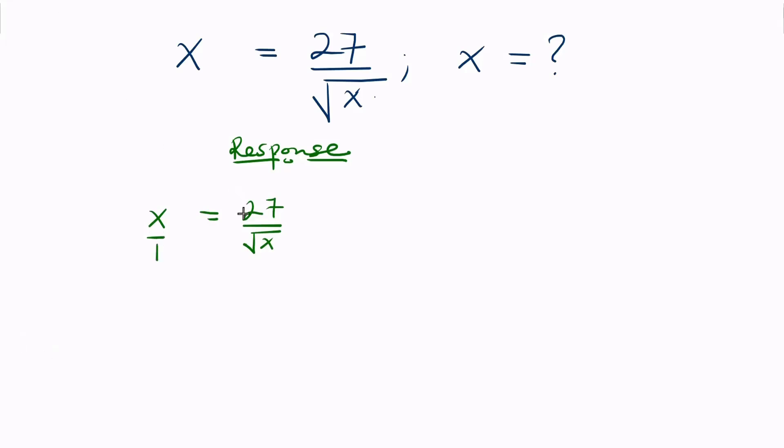What we're going to do is cross multiply, such that we have x multiplied by the square root of x equaling 27 multiplied by 1.